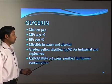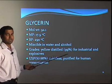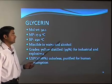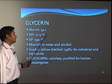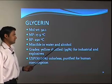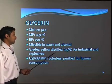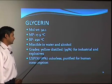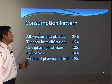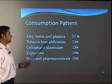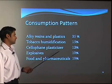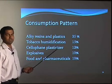The next important product of the soap and detergent industry is glycerin, which is usually a byproduct but has significant economic value as many products use glycerin as a raw material. It has a molecular weight of 92.1, melting point of 17.9 degree centigrade, and boiling point of 290 degree centigrade. It is completely miscible in water and alcohol. Yellow distilled glycerin is used for industrial and explosive use, or 95 to 98 percent colorless purified glycerin is used for human consumption. The consumption pattern is: alkyd resins and plastics 35 percent, tobacco humidification 15 percent, cellophane plasticizer 12 percent, explosives 10 percent, and food and pharmaceutical 10 percent.